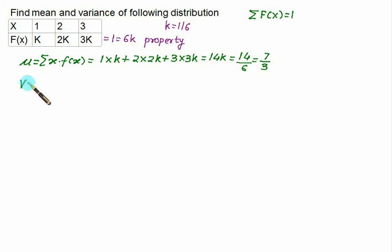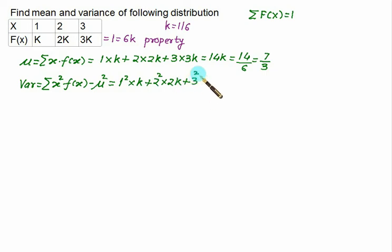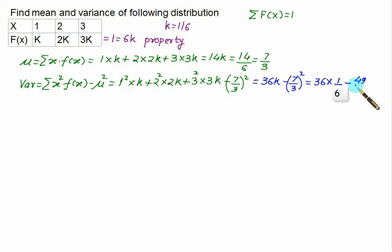To calculate the variance, we have the formula sigma of x squared f(x) minus mu squared. We have 1 squared multiplied by k plus 2 squared multiplied by 2k plus 3 squared multiplied by 3k, minus 7 by 3 whole squared. The sum gives 36k minus 49 by 9. Substituting k equals 1 by 6, we get 36 times 1 by 6 minus 49 by 9, and the final answer is 5 by 9.